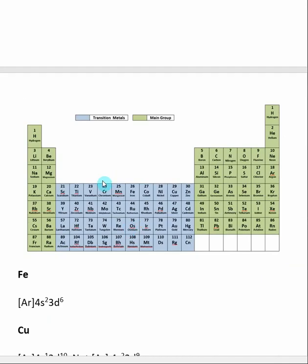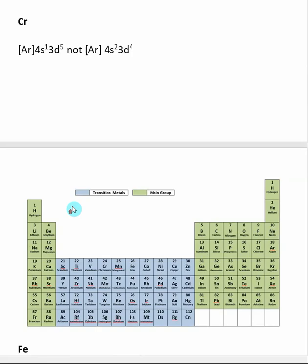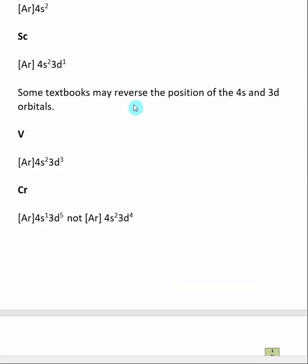And this will come up and be more important when we start removing electrons from transition metals to make cations. I prefer to just keep it straight so that it follows the linearity of the periodic table. So here we go from argon. This is 4S. And then this is 3D. So this will become more important when we start forming transition metal cations.